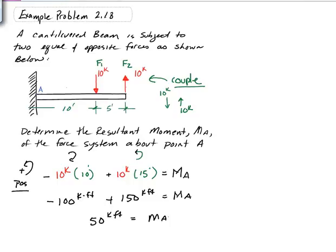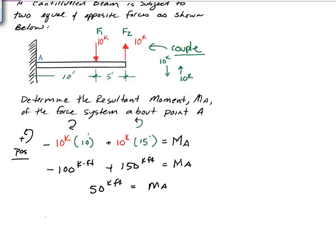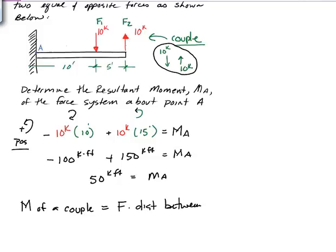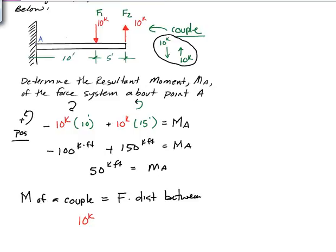Now it's interesting to note here, this is the nature of a couple. The nature of a couple, if we look up here, the moment of a couple is equal to the force times the distance between. So for instance, in this case, we have 10 kips times 5 feet is 50 kip feet.